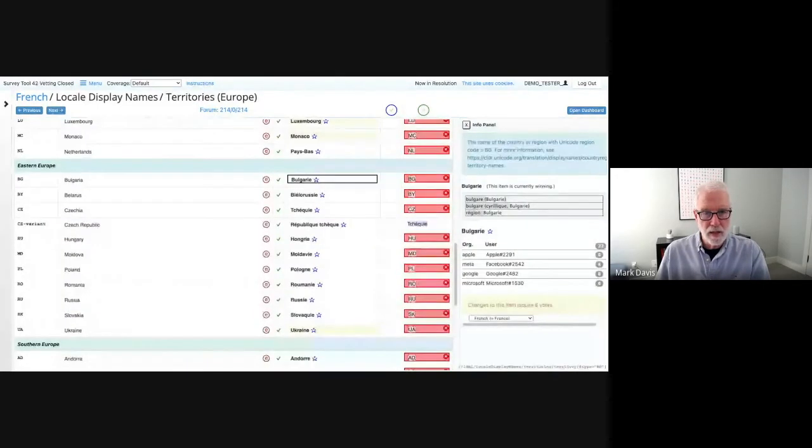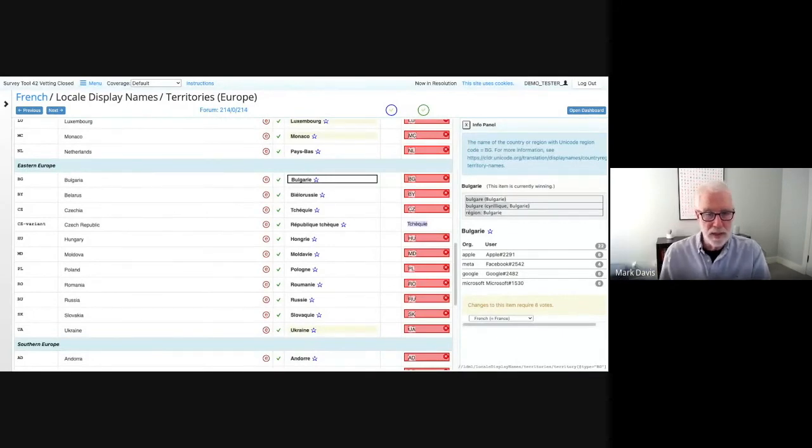So let's take a look at another tab. Here, for example, we're looking at the name of a country, Bulgaria, in French, and we also supply information for how these things are going to look like in usage. Languages and countries and scripts are used in describing different locales. So here you see Bulgarian as used in Bulgaria, you see Bulgarian written in Cyrillic, which is normally the default, as used in Bulgaria, or you can see a region Bulgarian, Bulgaria. And once again, you see a recording of who voted for what, and what the consensus was.